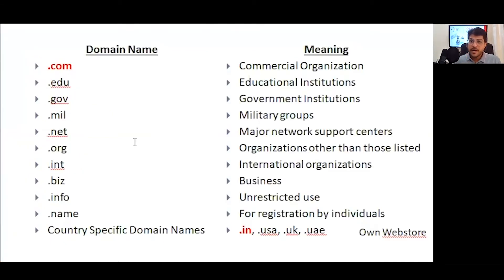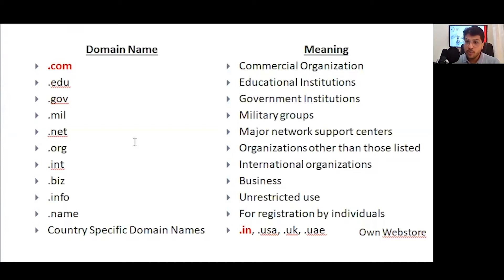When you go to domain name websites to search for a domain name, you will find extensions like .com, .net, .in, and .biz. The .com extension is the most commonly used extension across the globe, representing commercial organizations, and it is always preferred to have a .com domain name.